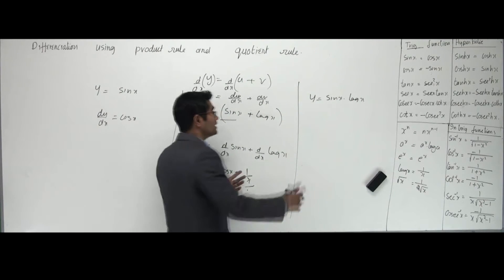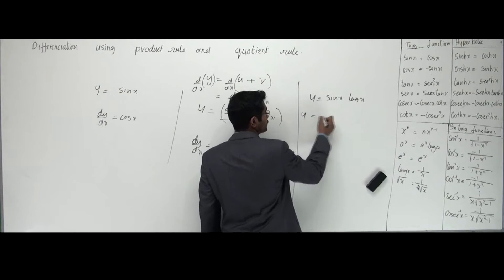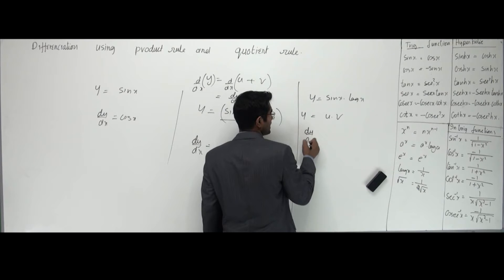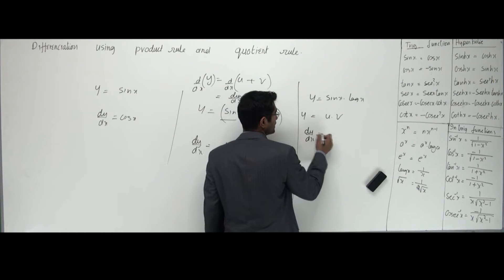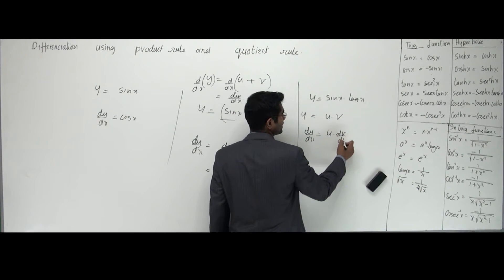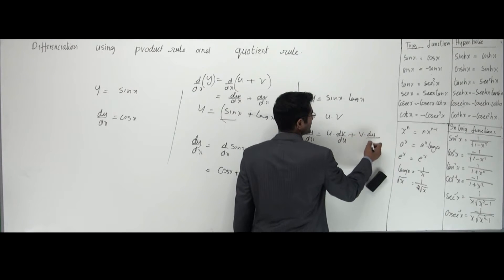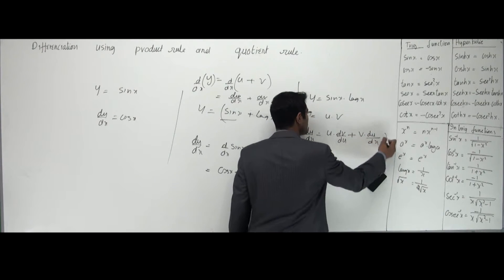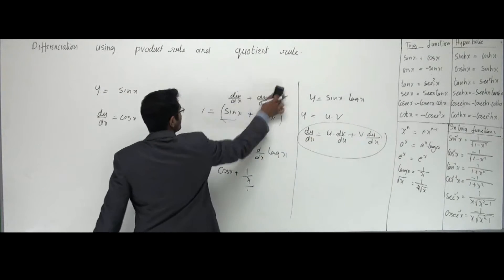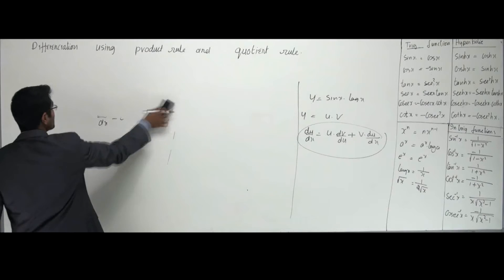For this case, we have the product rule formula: if y = u · v, then dy/dx = u · (dv/dx) + v · (du/dx). That's the formula. Let me explain it more easily.